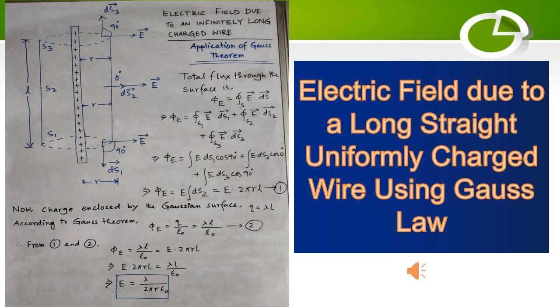You can write the electric flux as the closed surface integral of E vector dot ds vector. Since we have taken an infinitely long straight wire divided into three parts s1, s2, s3, the total surface integral of E·ds is the sum of all three regions.